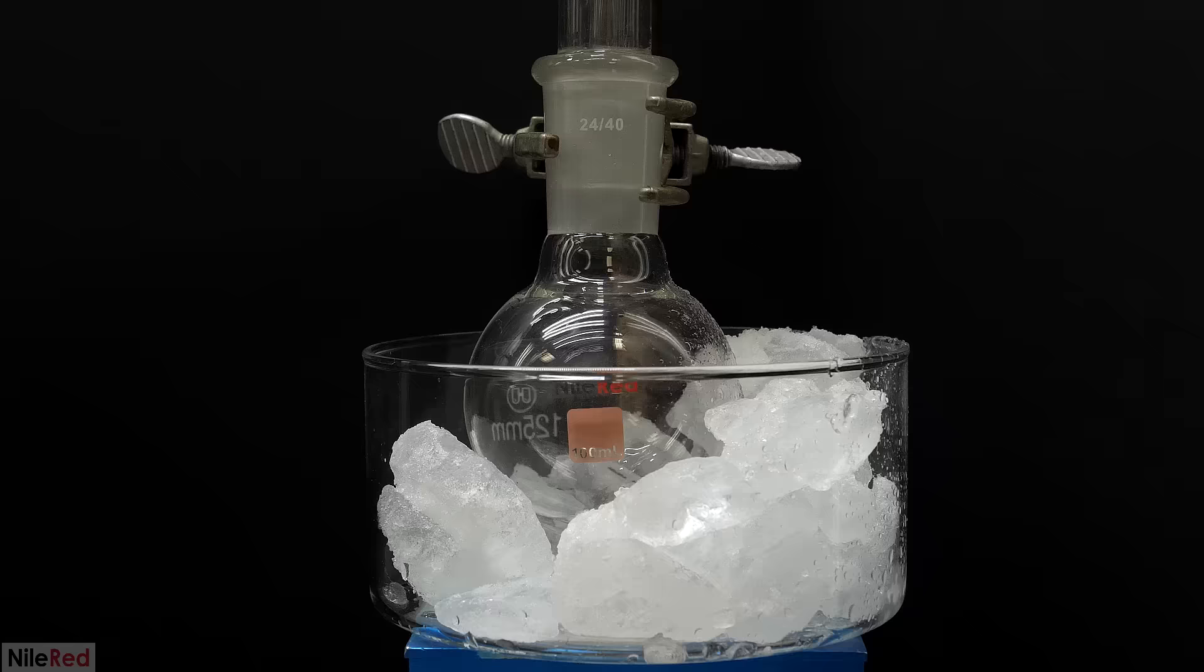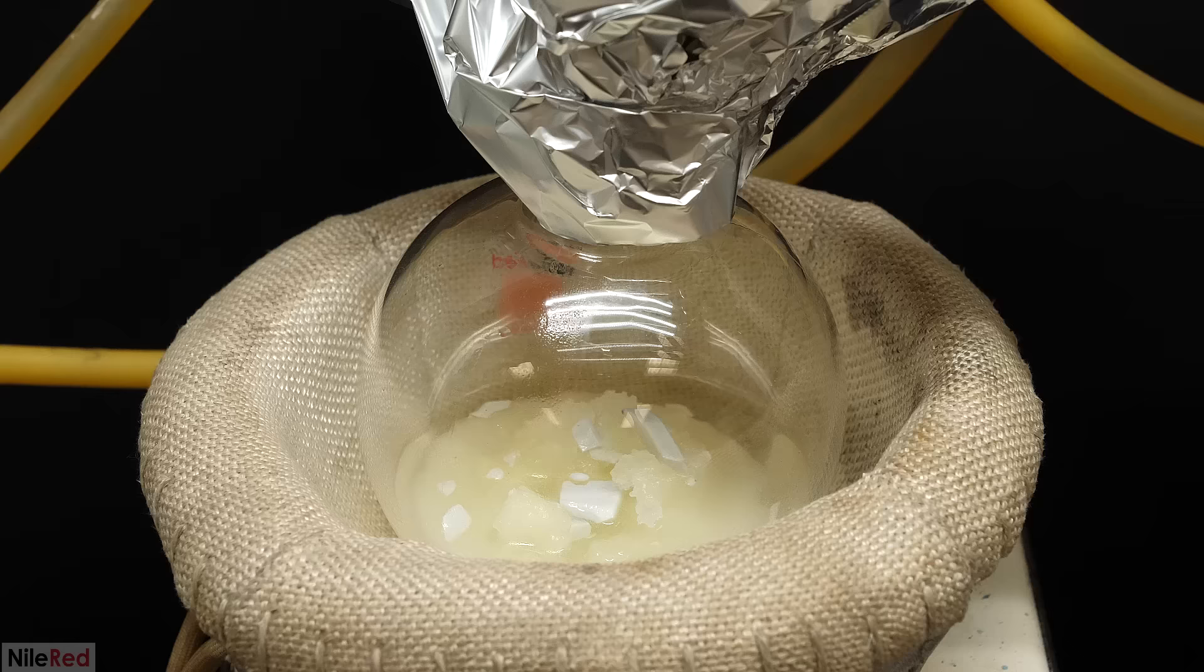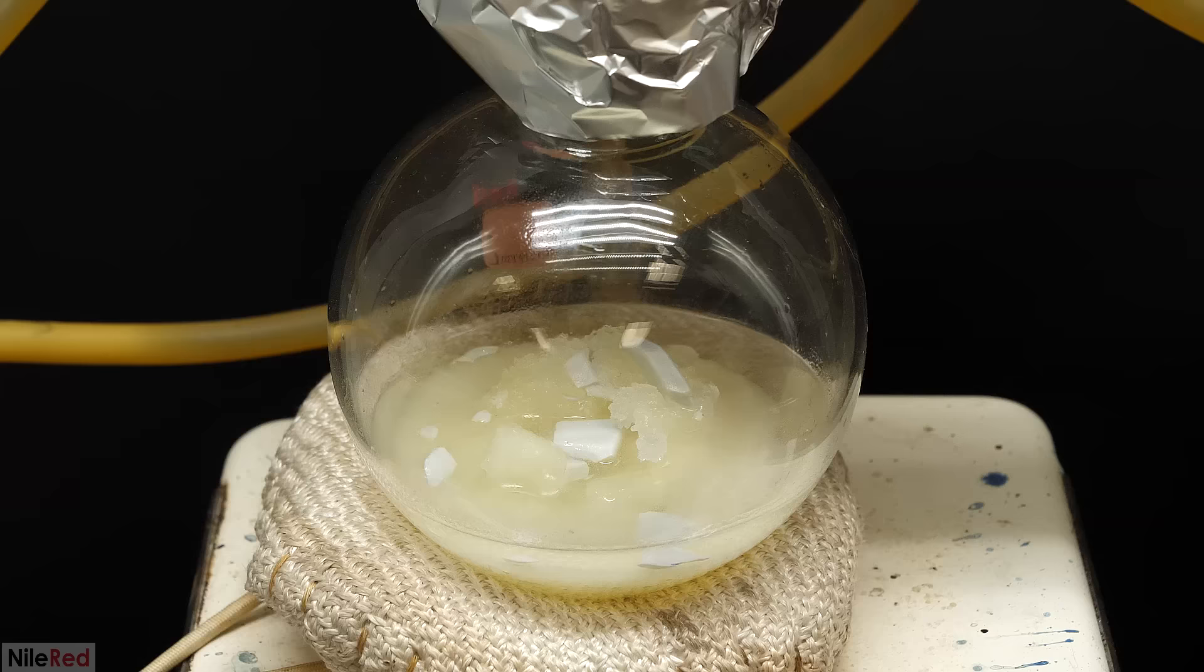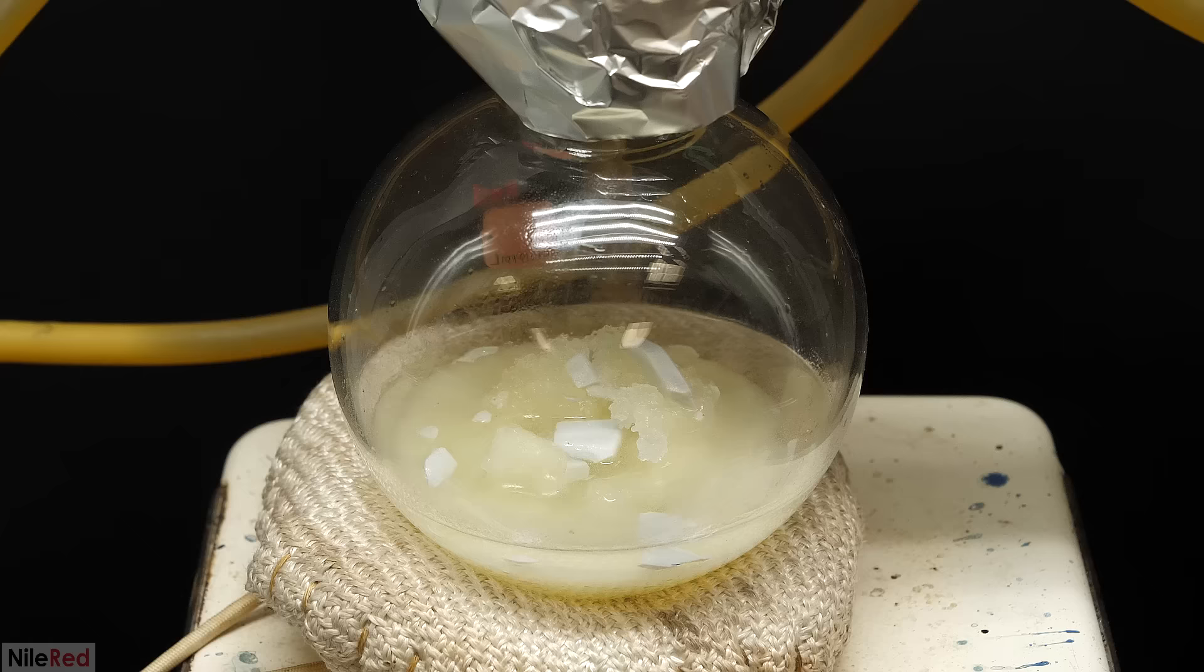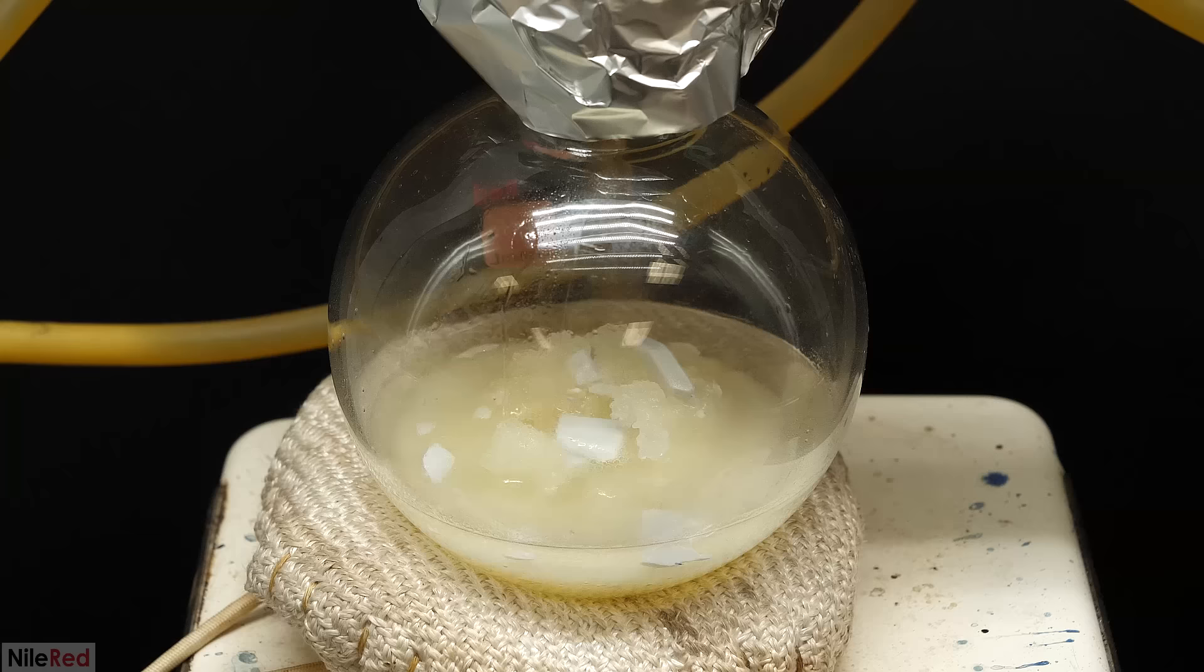When I was ready to get started, I packed the receiving flask with some ice water, and I turned on the heating mantle. After about 30 seconds though, it started smoking for some reason. I'm not exactly sure what it was, but it kind of smelled like solder, and I didn't really want to use it anymore. So I swapped it out for my smaller one, which probably turned out to be better, because you can see a lot more of what's happening.